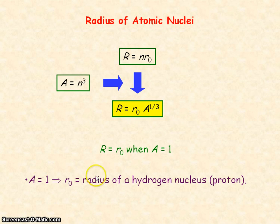So when A equals 1, that represents the hydrogen nucleus. So R0 could be considered the radius of a hydrogen nucleus, which is made up of a proton. So R0 is the radius of a proton.